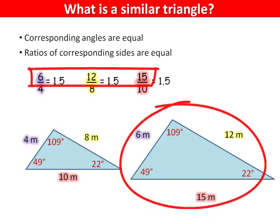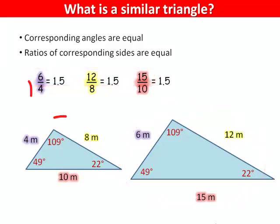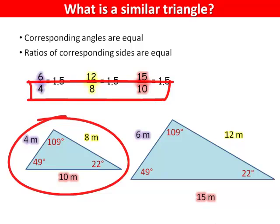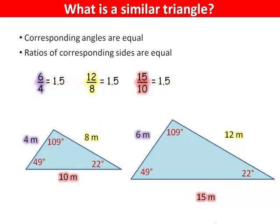Notice that all of the side lengths of the larger triangle are on the top of the fractions and all of the values for the smaller triangle are on the bottom. When you divide these figures, they all equal 1.5. This is called the scale factor. The larger triangle is 1.5 times as big as the smaller triangle.